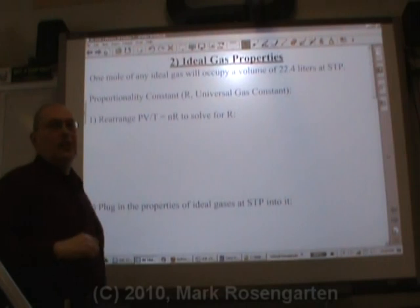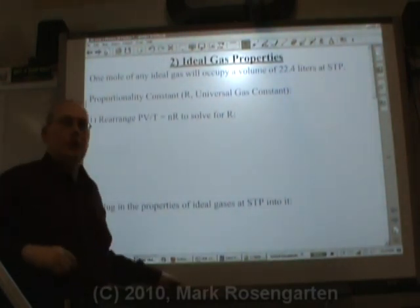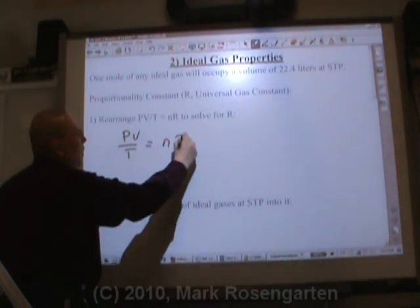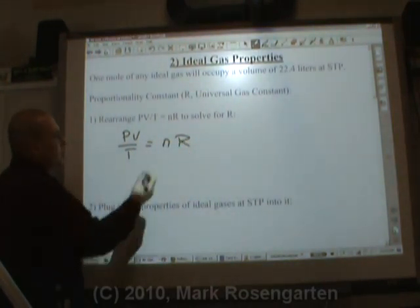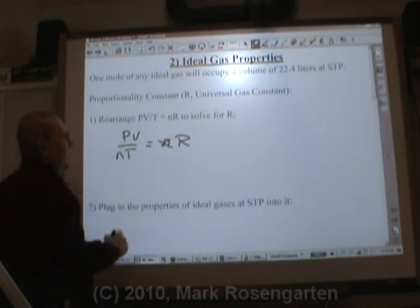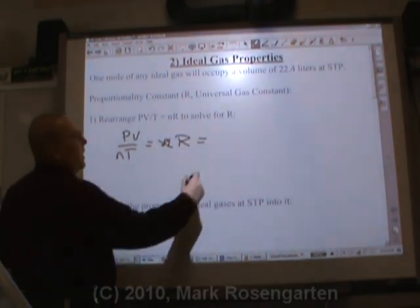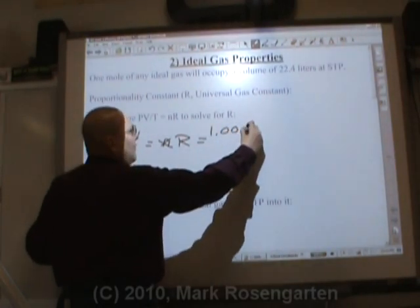To find the universal gas constant, let's just rearrange this equation. PV over T is equal to NR. So to solve for R, we're just going to divide both sides by N. And now we're going to plug in some numbers.